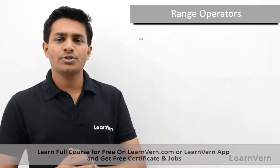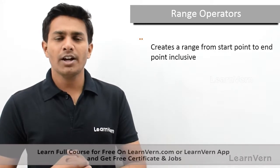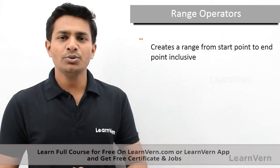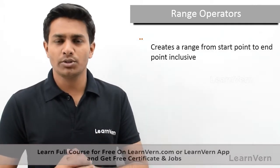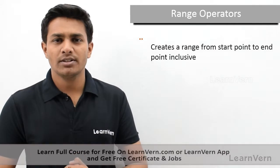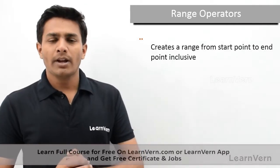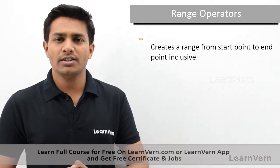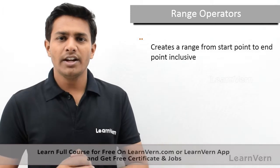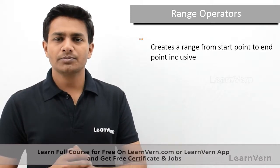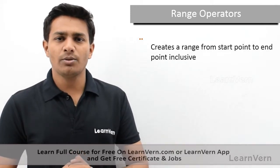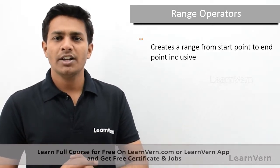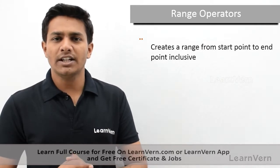The first range operator is double dot. When I want to iterate from a start point to an end point, including both the start and end point, I will use the double dot operator. For example, if I want to iterate from one to ten, I write one double dot ten, so it will range from one, two, three, four, five, six, seven, eight, nine, and the last limit, which is ten.